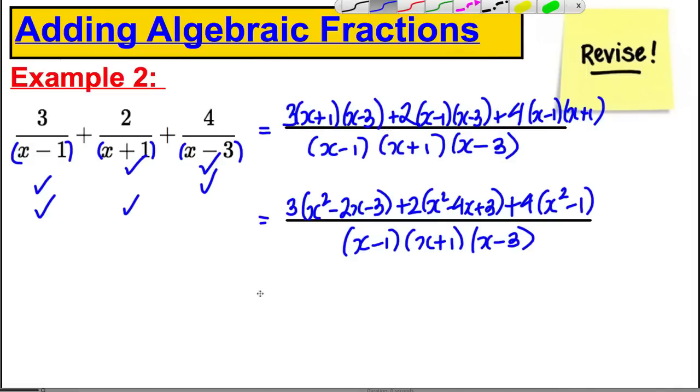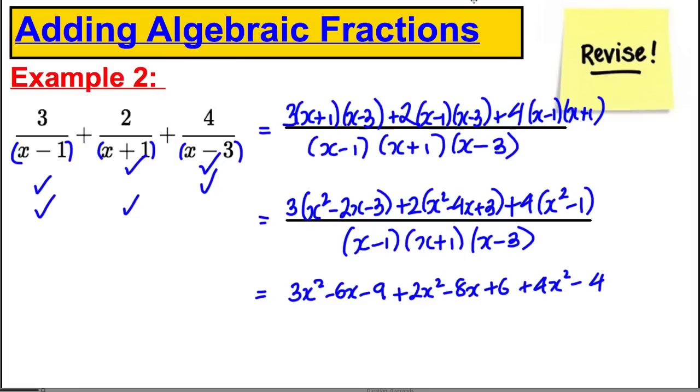Okay, now we're going to multiply through by these factors here. So I have on the top three x squared subtract six x subtract nine plus two x squared subtract eight x plus six plus four x squared subtract four. And all of this would be over the same denominator we had before. X subtract one, x plus one, x subtract three. And lastly, let's just tidy up.